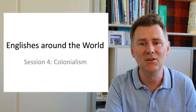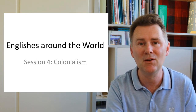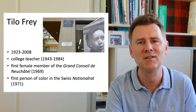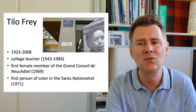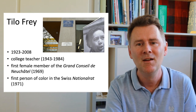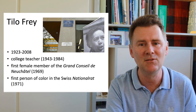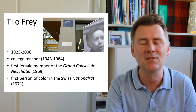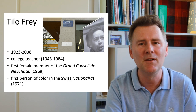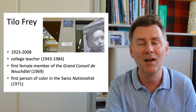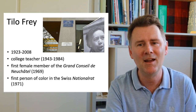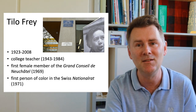I'd like to start with a picture of my university, the University of Neuchâtel in Switzerland. This is the building I work in, and you can see that the address is Espace Thilo Frey. She was a Swiss college teacher and politician — the first female member of the Grand Conseil de Neuchâtel, the regional parliament, and the first person of color elected to the Swiss Nationalrat, the national parliament. In her political work she was an outspoken advocate of civic rights, and it is fitting that her name marks this university faculty of humanities and social sciences.